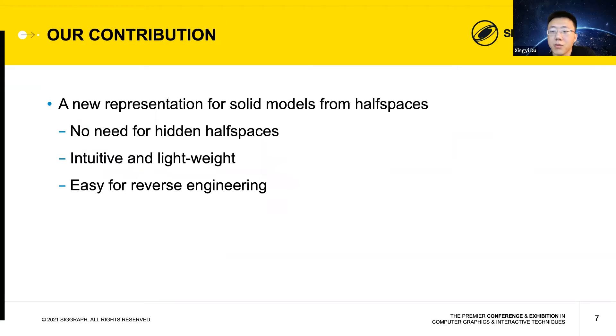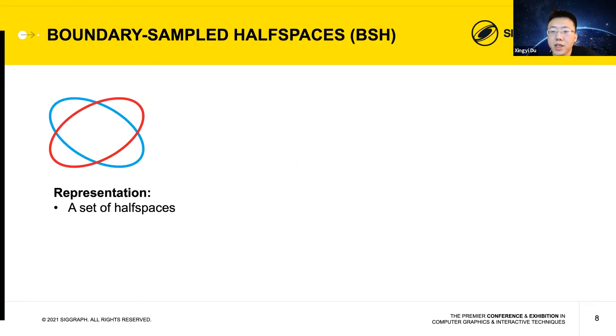To address the aforementioned limitations of CSG, we propose a new representation for solid models from half spaces. In particular, our representation doesn't need hidden half spaces, is intuitive and lightweight, and is easy for reverse engineering. Our representation, like CSG, uses a set of half spaces. Instead of Boolean operations in CSG, we define the shape using a set of samples lying on the half space boundaries. The idea is to use samples to indicate which part of the half space boundary belongs to the boundary of the final solid shape.